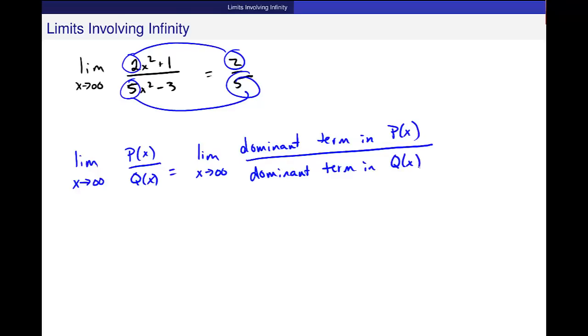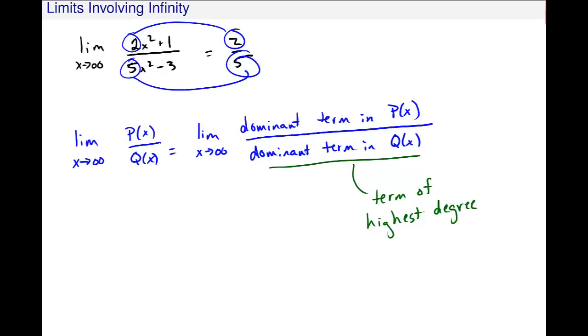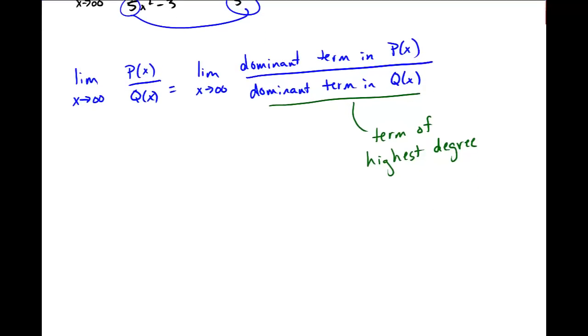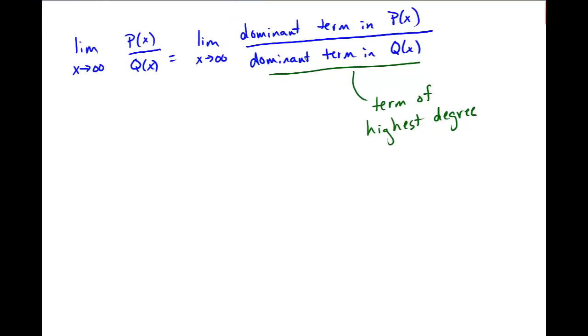So, we have this result that we'll use. The limit as x goes to infinity of p(x)/q(x) is equal to the limit as x goes to infinity of the dominant term in p(x) over the dominant term in q(x). And the dominant term is the term of highest degree. So, let me redo this problem just showing you how that works instead of using this division. This is another technique, so we have the zillion technique that's very unscientific. We also have this technique.